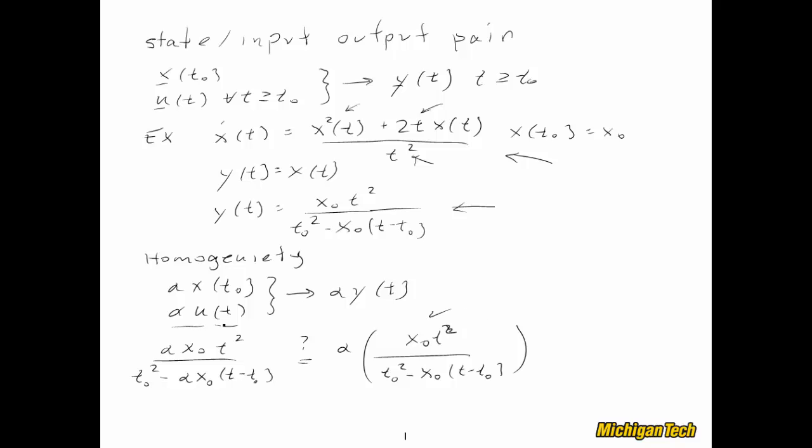And that is a 2 right there. Well, the numerators look fine. Alpha times x0 times t squared. But the denominators, no way. The denominator on this side doesn't have an alpha in it. This one does. There's no way that those two things are equal. So homogeneity does not hold. And we can conclude that the system is not linear. That is, it's nonlinear.